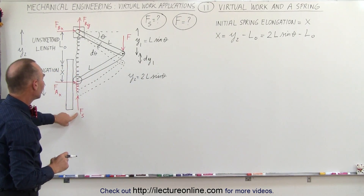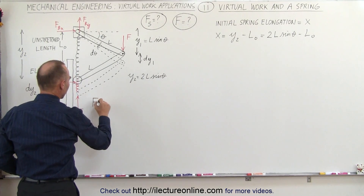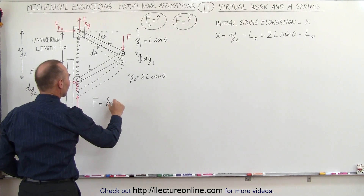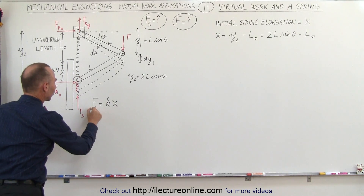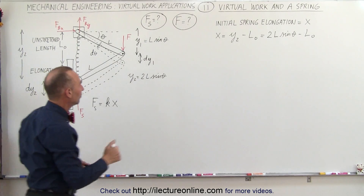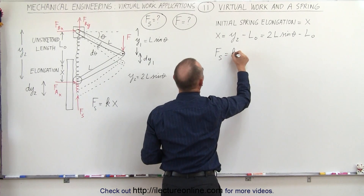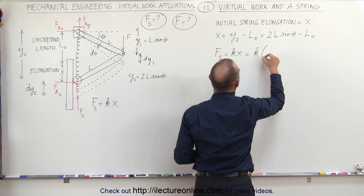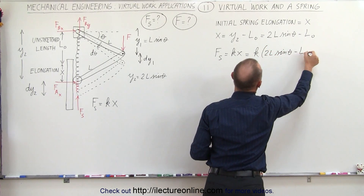The force on the spring equals the spring constant k times the elongation x. So the spring force Fs equals k times x, which equals k times (2L sine theta minus L sub-naught). The spring constant k is specific to this particular spring.